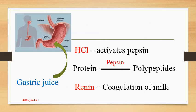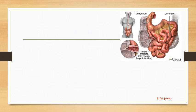Then the chyme, which contains partially digested proteins, digested and undigested carbohydrates, undigested lipids, water, minerals and vitamins, is released to the small intestine. Mainly chemical digestion takes place in the small intestine.